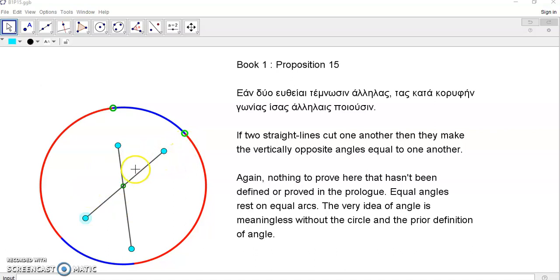So, how do we know that these vertically opposite angles are equal? Well, what about this one and this one? Well, if we extend these lines, like so, we can see that these angles are equal because they rest on the same arc, right? And similarly, these larger angles rest on the red arcs.